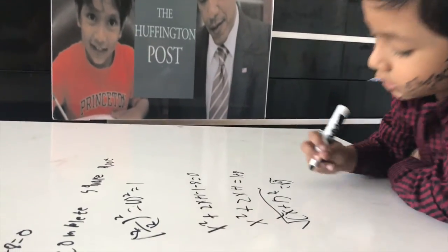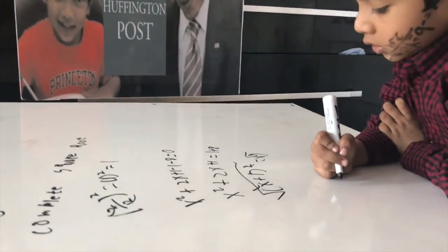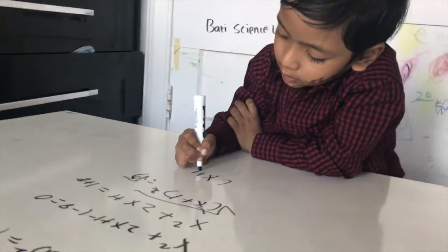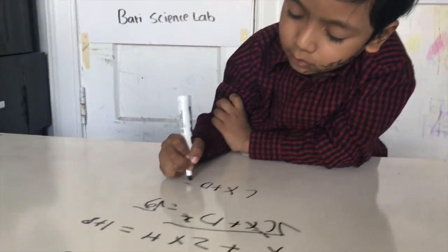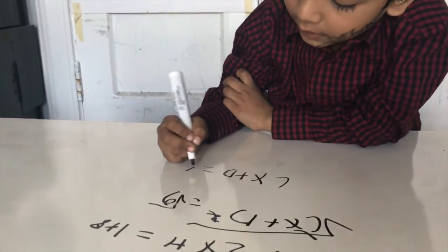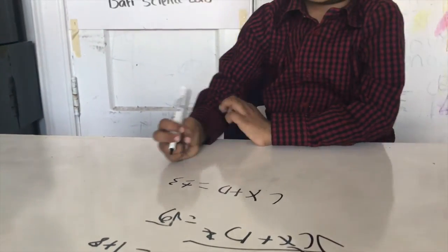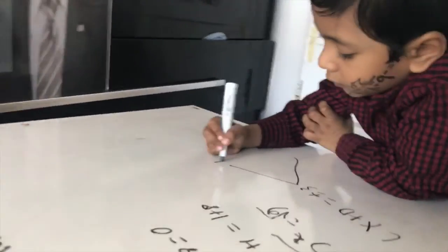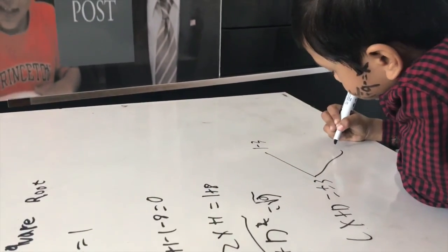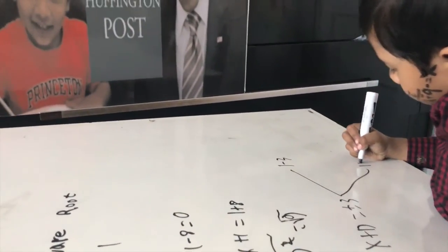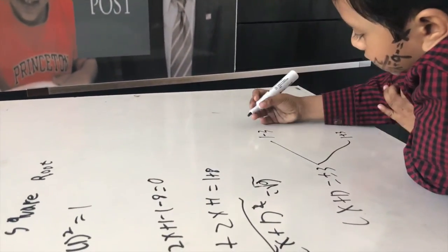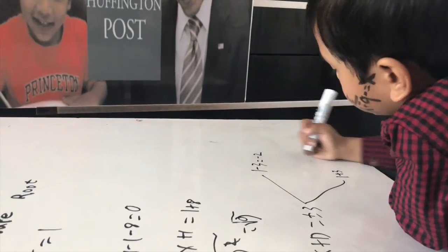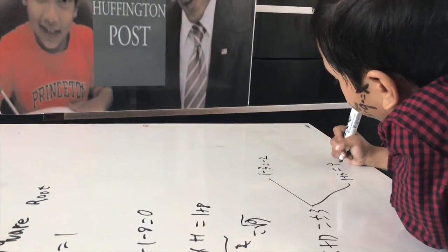Then we square root both sides — the square cancels — and X plus 1 equals plus or minus 3. It has two values: 1 minus 3 and 1 plus 3. So X equals negative 2 and X equals 4.